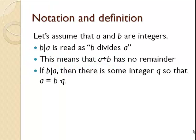Let's assume that a and b are integers. b divides a is read as "b divides a". It means that a divided by b has no remainder, and if b divides a, there's some integer q so that a equals b times q.